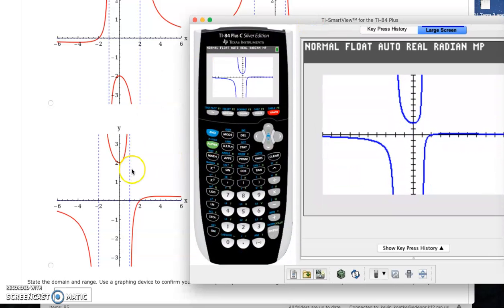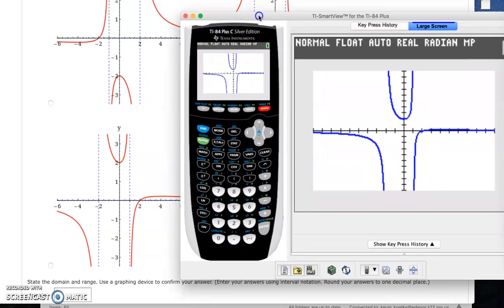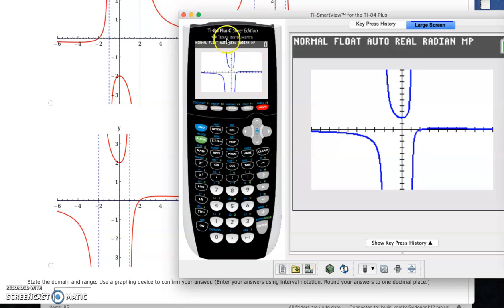Now domain is broken up by the asymptotes, the vertical asymptotes. So you're going to go negative infinity to negative 2, negative 2 to 1, and then 1 to infinity for the domain.